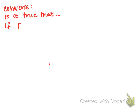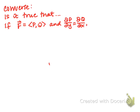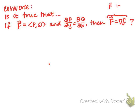Specifically, if F = (P, Q) and partial P partial y equals partial Q partial x, does it follow that F is a conservative vector field — i.e., that F equals the gradient of some scalar function? In order to answer that, we first need a definition.